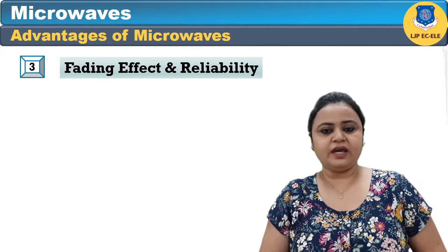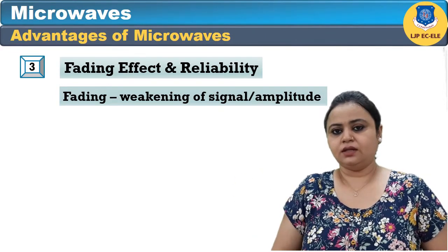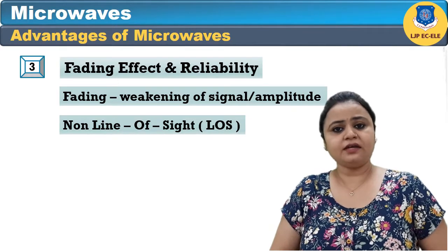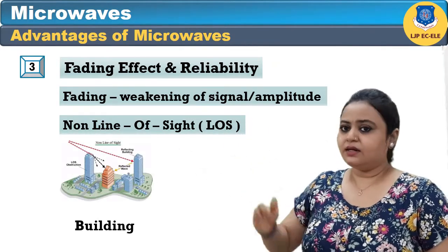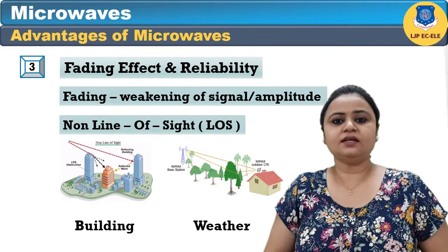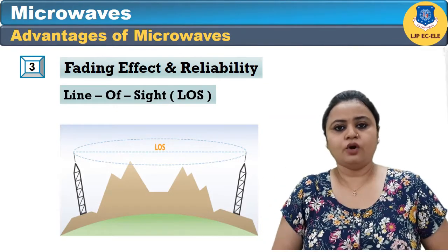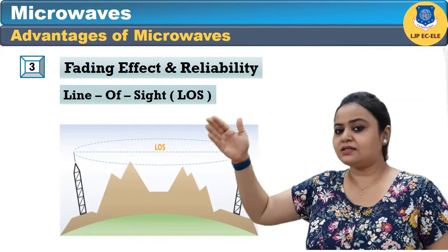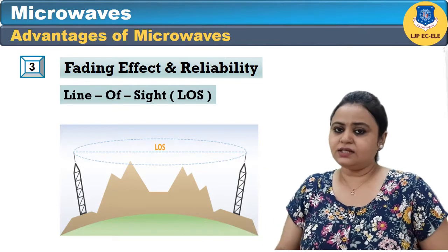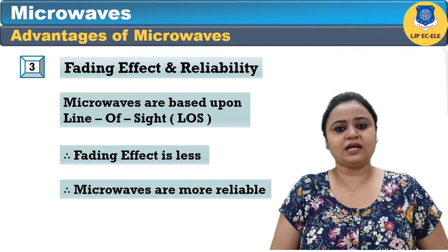The third important advantage of microwaves is reduced fading effect and reliability. Fading means weakening of the signal or amplitude. During transmission from one antenna to another, many factors can affect the signal — like buildings, weather, monsoon, and multipath transmission. But microwaves are based upon line-of-sight parameters, meaning one antenna sees the other antenna and their heights are similar. Because of this line-of-sight property, the fading effect in microwaves is very less, making microwave transmission very reliable.